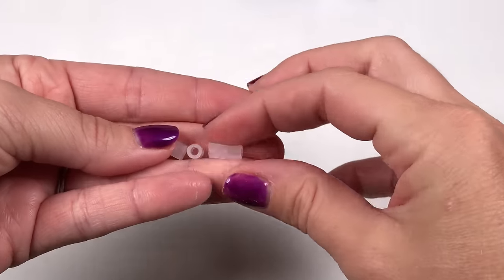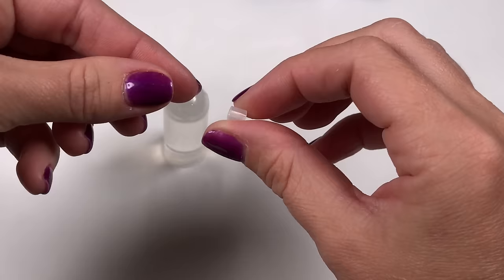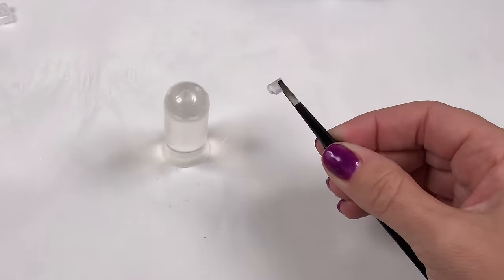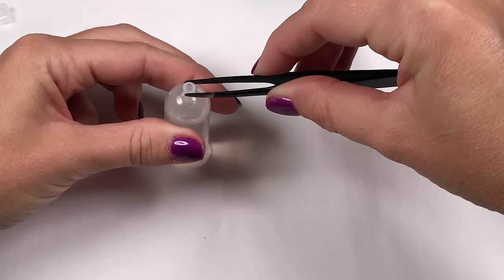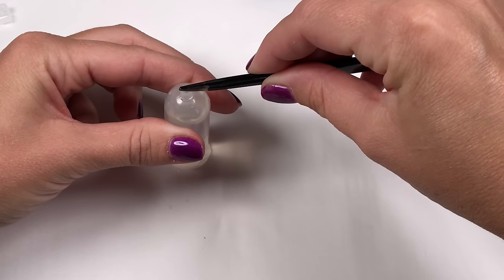For the neck of the water bottle, you can use clear perler beads or you can use a straw. If you're using a straw, cut it to size and then glue it to the top.